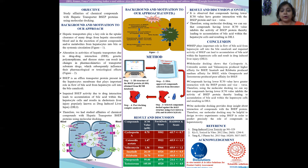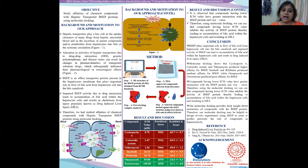In conclusions, B-safe plays an important role in the flow of bile acid from the hepatocyte cell into the bile canaliculi, and impaired activity of B-safe can lead to accumulation of bile acid within the hepatocyte cells and result in drug-induced liver injury. Molecular docking shows that cyclosporine A, cetrorelix acetate, and valinomycin produced higher affinity for B-safe; imatinib and rifabutin produced medium affinity; while omeprazole and testosterone produced poor affinity for B-safe. Compounds having lower IC50 value have greater interaction with the B-safe protein and vice versa.